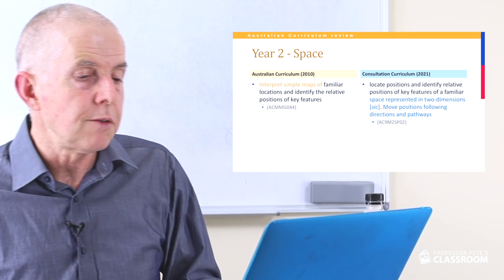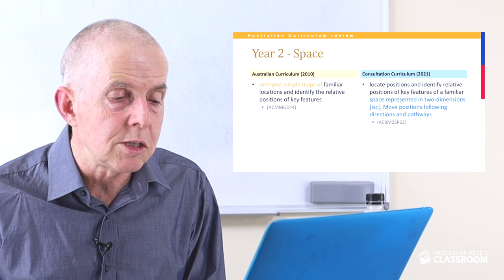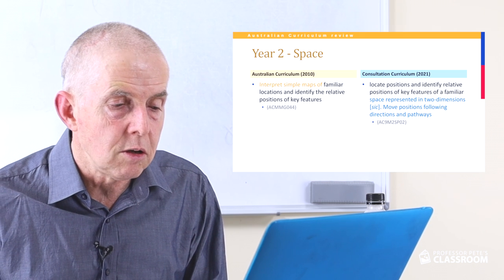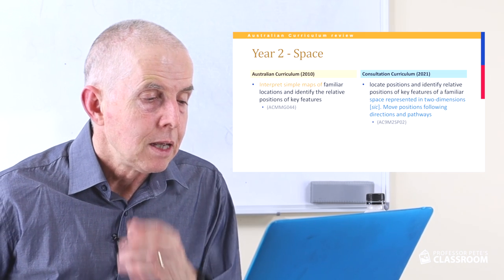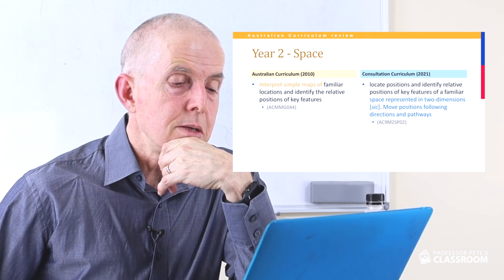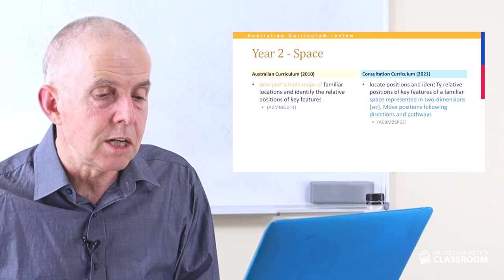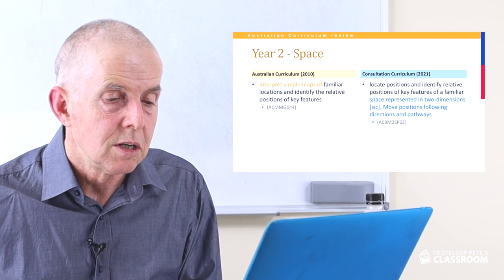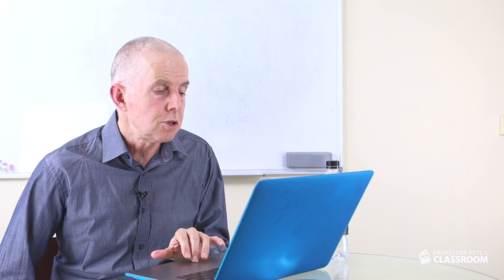Space descriptor two: locate positions and identify relative positions of key features of a familiar space represented in two dimensions, and move positions according to directions and pathways. The old version referred explicitly to interpreting simple maps of familiar locations. The new one doesn't mention maps, and I think that's an oversight. The word map makes it obvious to teachers and students that we're talking about mapping, and it's good vocabulary to include.